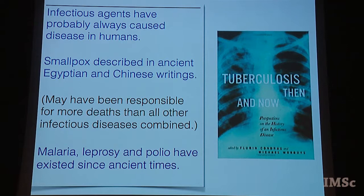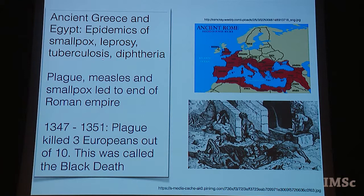Infectious diseases have almost certainly always caused disease in humans. Going back to early Egyptian and Chinese writings, they describe smallpox — which in particular may have been responsible for more deaths than all other infectious diseases combined. Malaria, leprosy, and polio have also existed since very ancient times. In ancient Greece and Egypt there's talk of epidemics of smallpox, leprosy, tuberculosis, and diphtheria. It's known that plague, measles, and smallpox in particular led to the collapse of the Roman Empire.